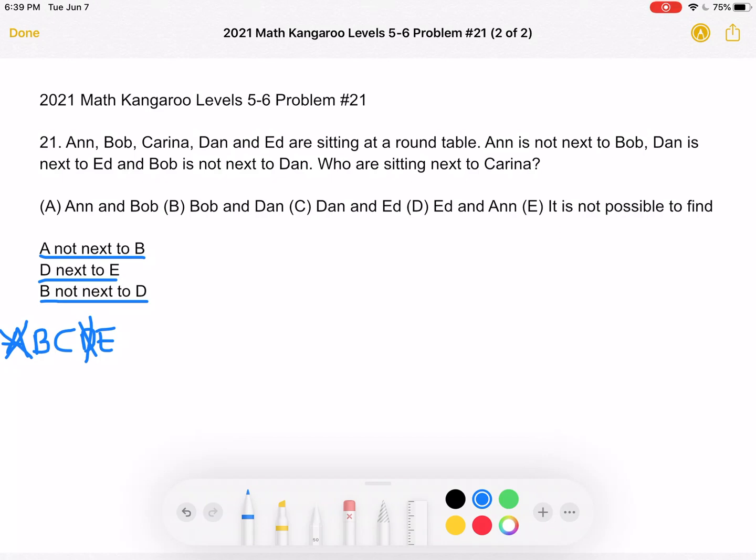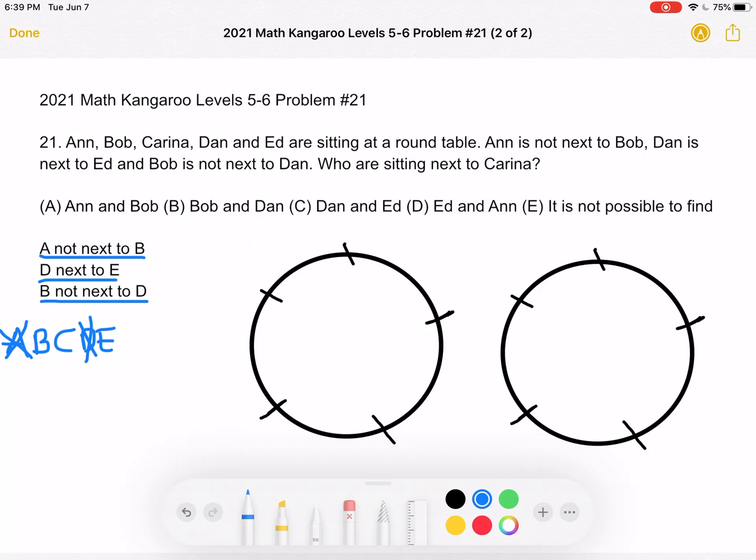Those are the two, C and E must be the two people that B is sitting next to. But we have two possible, I guess, orientations.